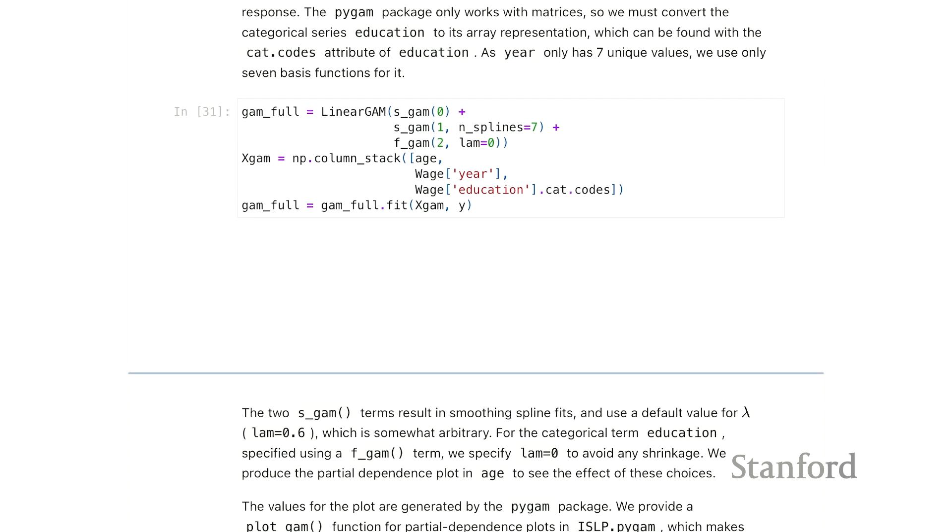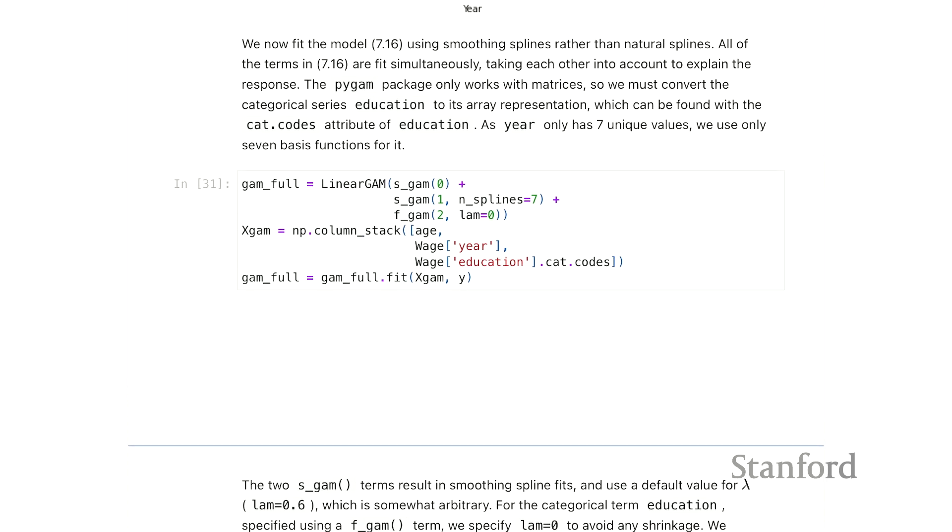So what we had just fit there was just ordinary least squares. We had specified a flexible function for each of the two features and dummy variables for the education level. And it wasn't strictly a generalized additive model, because it didn't have this smoothing penalty that we see in the lectures for Chapter 7.